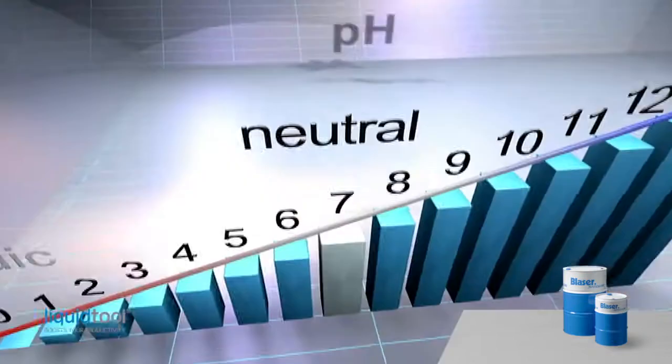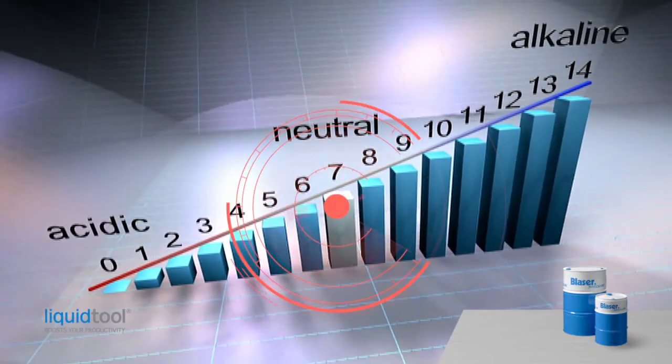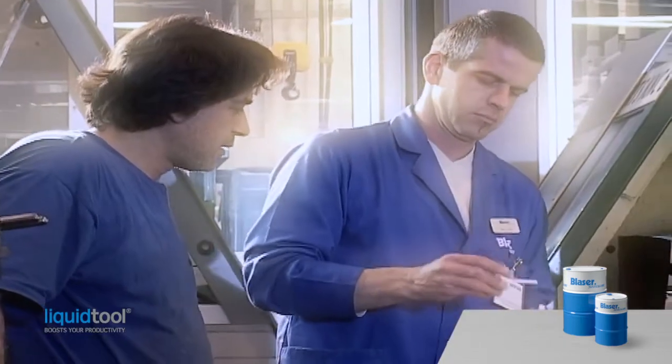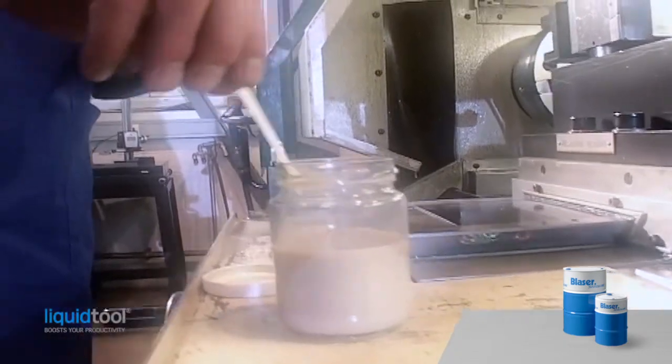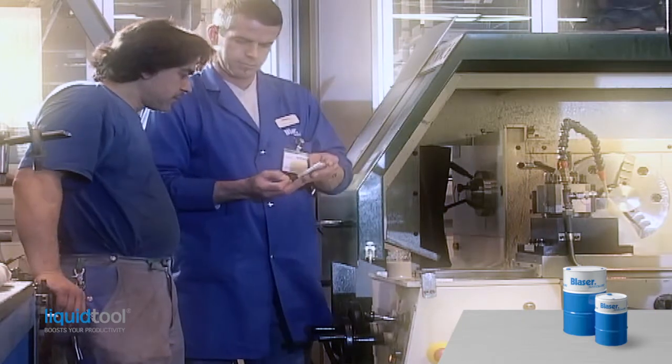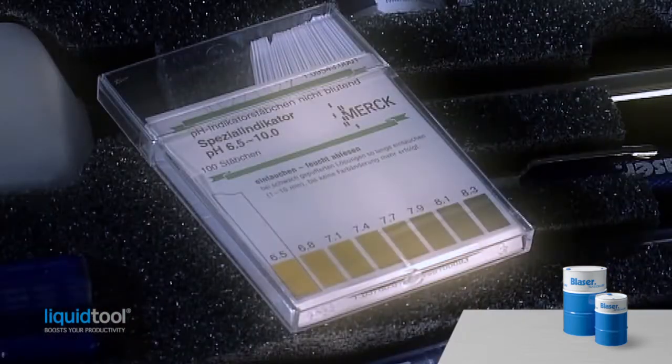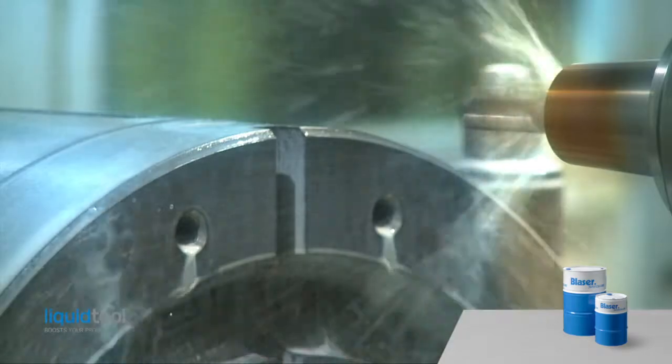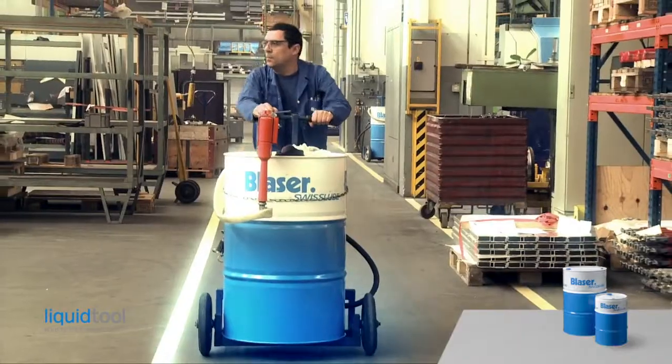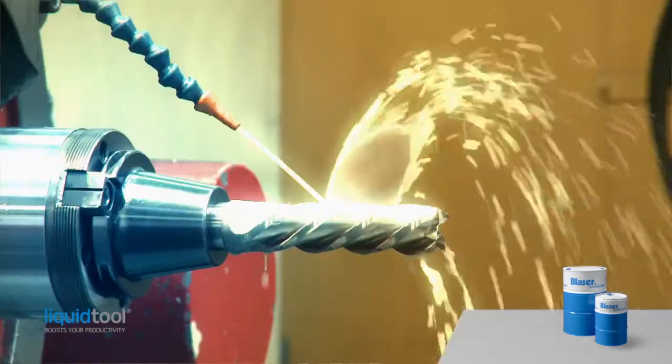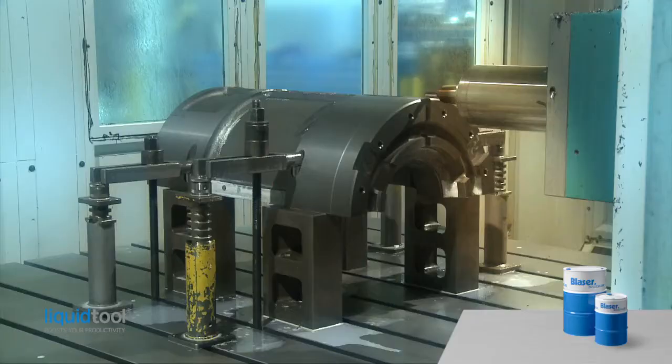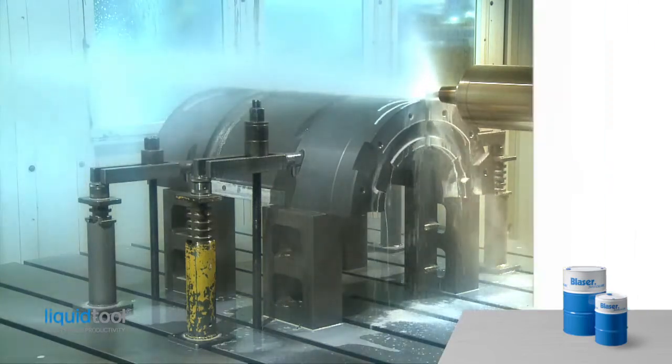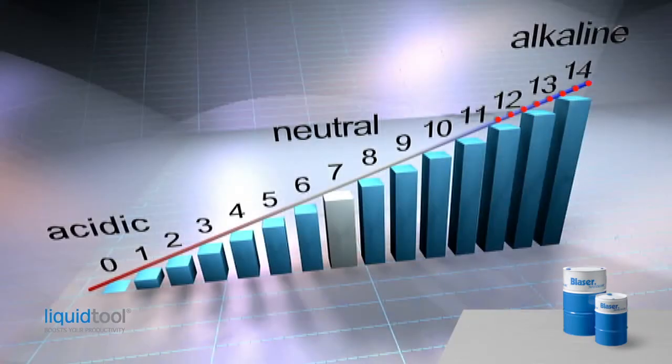The second parameter to be measured on site is the pH value. The pH value is measured once a week. pH strips are a very dependable method and the risk of error is extremely low. pH sticks with a range of 6.5 to 10.0 are best. For some Blaser Cut and Basco products, the pH value is almost as important as the concentration. A low pH value is an early warning that long-term stability is jeopardized.